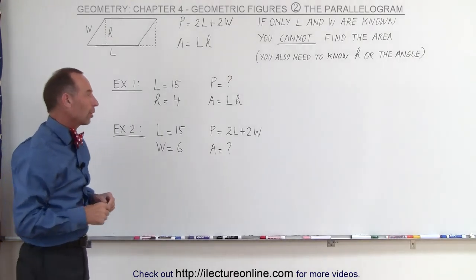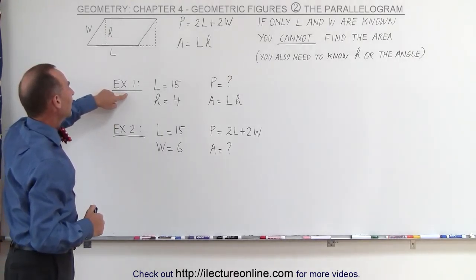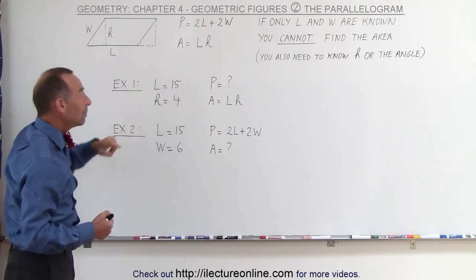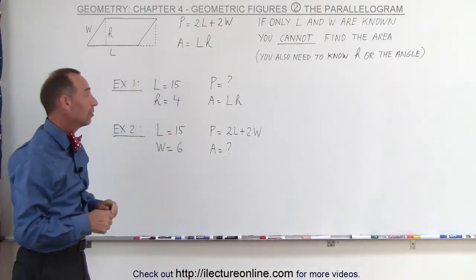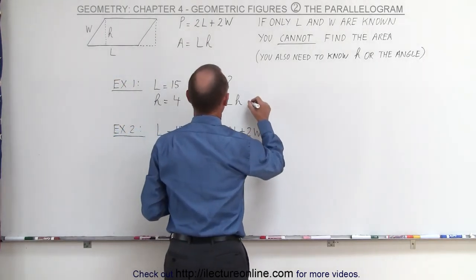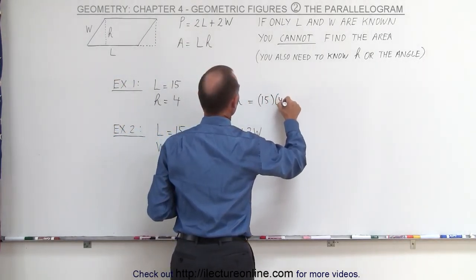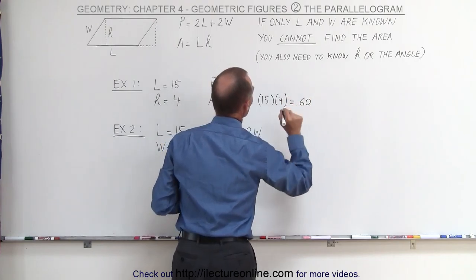Let's do a few examples. Our first example: we're given the length of the long side and we're given the height. That means we can find the area, and so the area is going to be the length times the height. In this case, it'll be 15 for the length, 4 for the height, so that would be 60 square units.